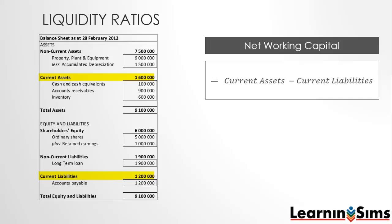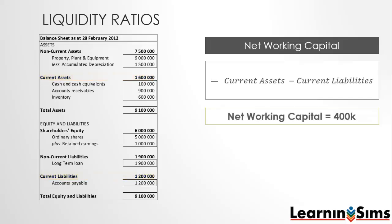This figure is not useful for comparing the performance of different companies. However, it is useful for internal control. Often a contract under which long-term debt is incurred specifically states a minimum level of net working capital that the firm must maintain. This protects the creditors by forcing the firm to maintain sufficient operating liquidity.